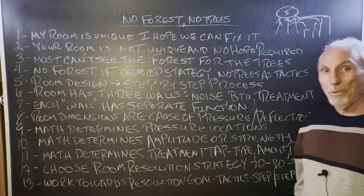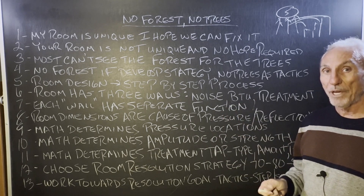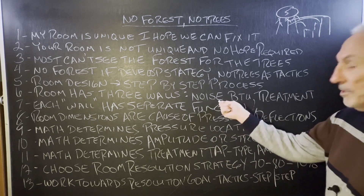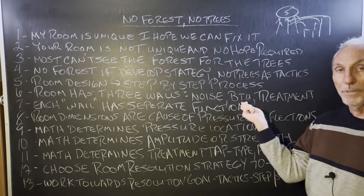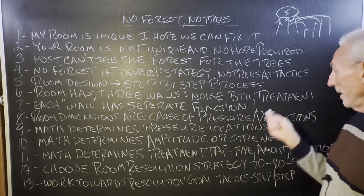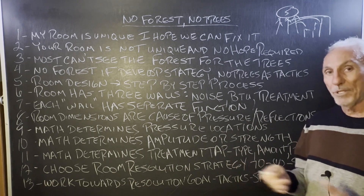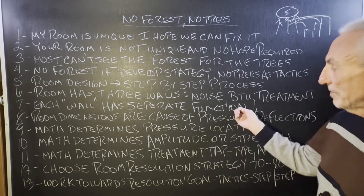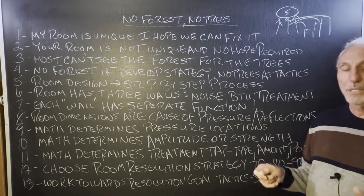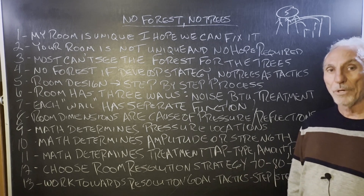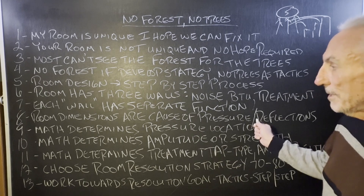When we're looking at room design, we must realize that the room has three walls inside of itself. It has noise for barrier — that's the barrier. BTU is warm and cool, keeping the climate controlled, and then the treatment of the absorption and diffusion. So we have three walls. Everybody combines those, but you can't, because there are three separate functions. Sometimes you can combine the barrier and the BTU wall together, but most of the time, depending on the noise, you might not be able to.